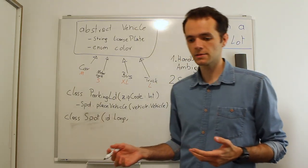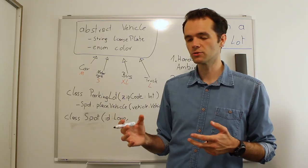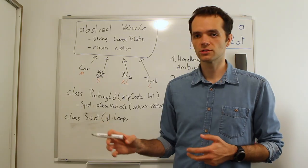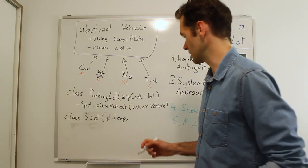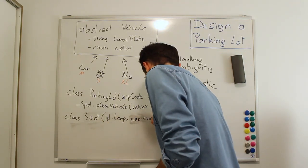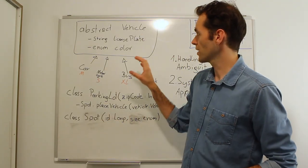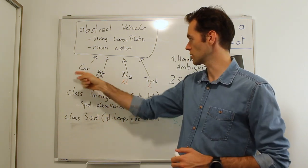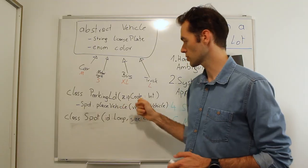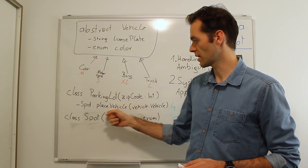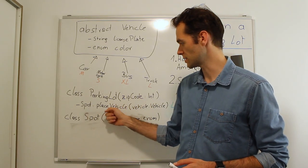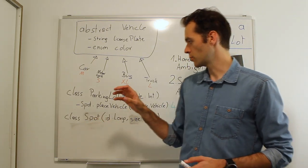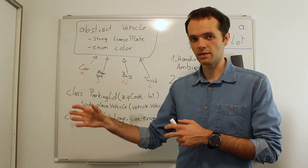Using an enum for size is a better approach than using a plain integer. Now we have a nice-looking design: an abstract vehicle with an inheritance hierarchy, a parking lot with a location and the crucial place vehicle method, and a representation of a spot.